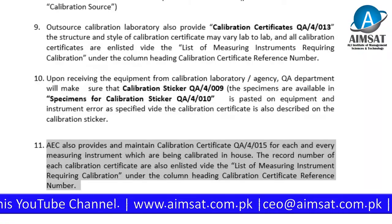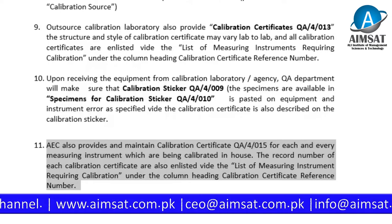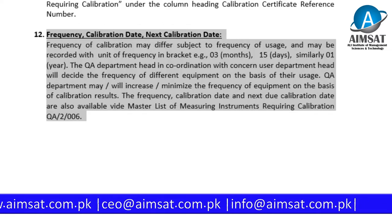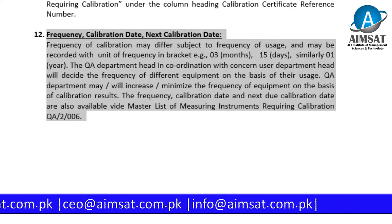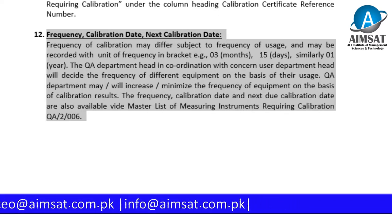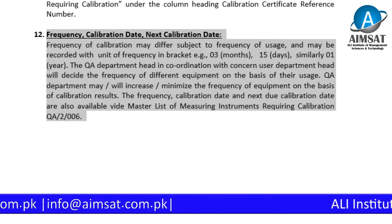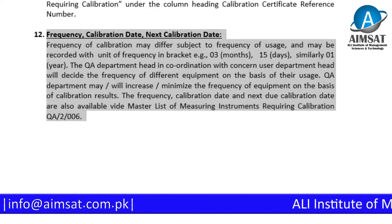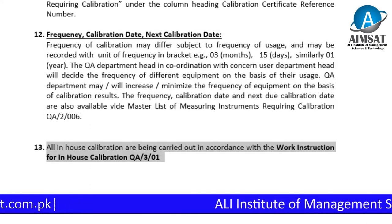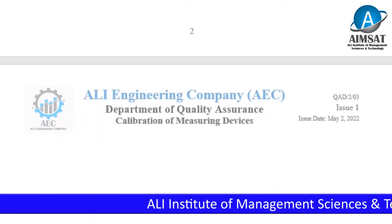AEC also provides and maintains calibration certificates for each measuring instrument that is calibrated. The record number of each calibration certificate is enlisted under the headings: calibration certificate reference number, frequency, calibration date, and next calibration date. The frequency of calibration may differ subject to frequency of usage, and may be recorded with a unit of frequency such as one year. The QA department head, in coordination with the concerned user department head, decides the frequency for different equipment based on usage. The QA department may also minimize the frequency of equipment on the basis of calibration results.